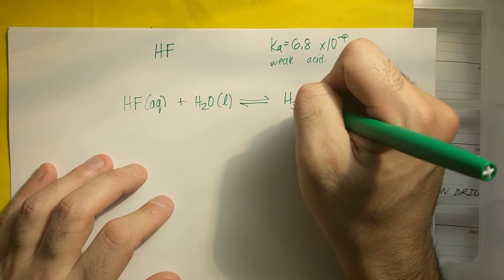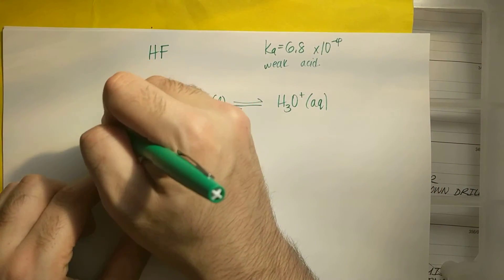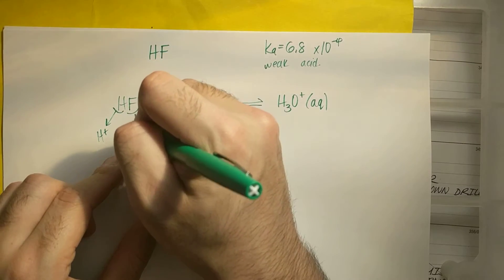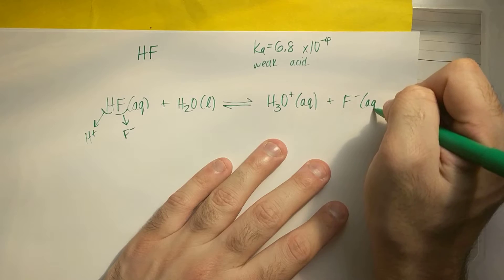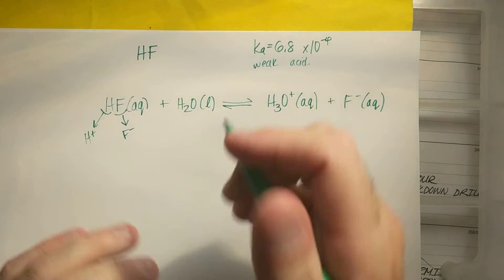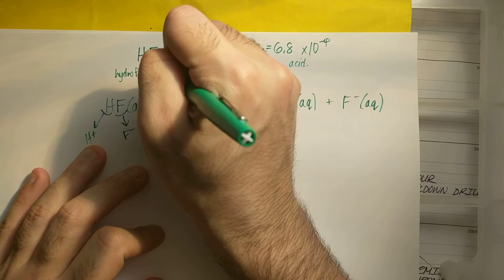And equilibrium, I'll write H3O plus aqueous. And the other ion here, if not H plus, is F minus. So plus F minus aqueous. And just for the name of this, this is hydrofluoric acid.